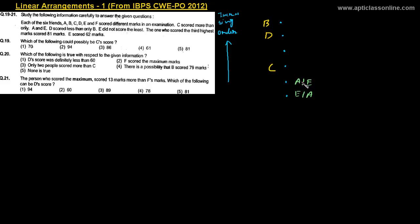E did not score the least. We know that either A or E scored the least. Since E did not score the least, E is second from the bottom at position 2, and A is at the last position, position 1. That leaves only F, which takes the remaining position 4.